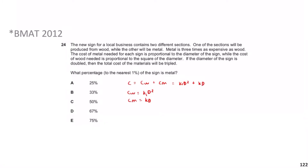It says if the diameter is doubled, the total cost is tripled. So 3C equals k₁(2d)² plus k(2d), which is 4k₁d² plus 2kd. So now we have two equations: equation one is C equals k₁d² plus kd, and equation two is 3C equals 4k₁d² plus 2kd.